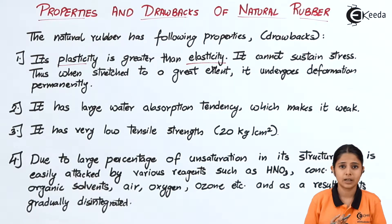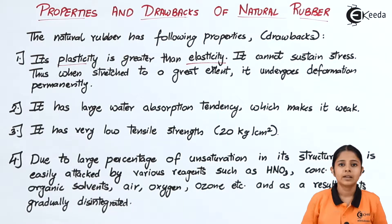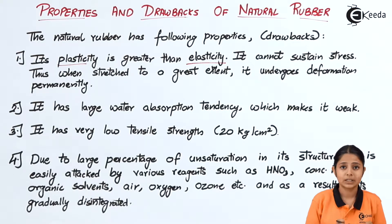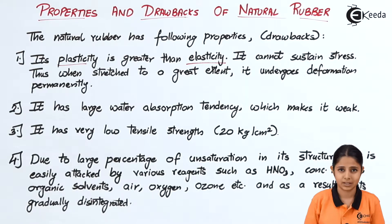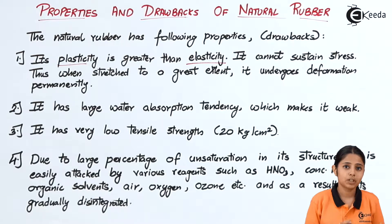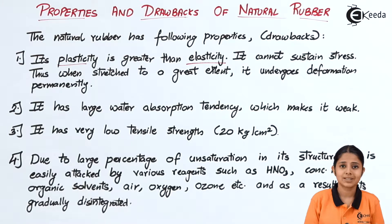Plastics are generally hard, they are brittle, they do not have good tensile strength, and you cannot stretch a plastic. Elasticity, on the other hand, is the property in which materials are soft, have good tensile strength, can be stretched, and are not brittle. Rubbers are generally elastic in nature, but natural rubbers tend to have more properties of plasticity than elasticity, which is not desired. To convert those plastic properties to elasticity, we need to vulcanize them.